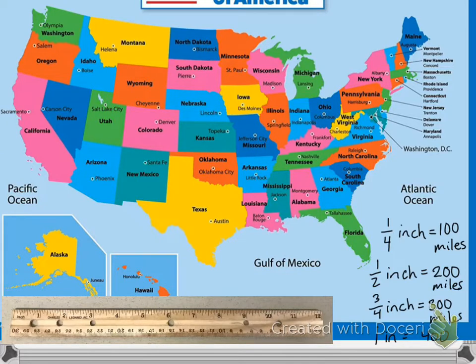If we use a map of the United States, we can measure distances. Usually you measure in miles or kilometers. In the United States, when we ride in a car, a bus, a train, or even a plane, we measure the distance using miles. In other countries, people use kilometers.